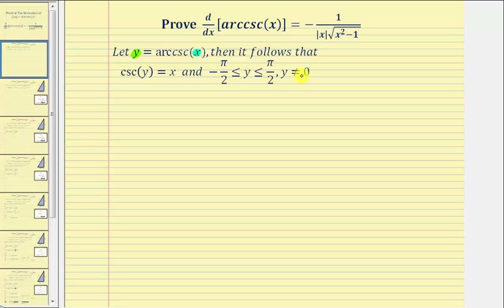Y cannot equal zero because, remember, where sine is equal to zero, cosecant is undefined.